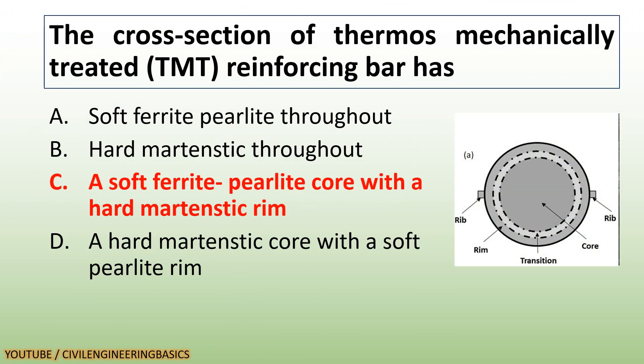The cross section of a thermo-mechanically treated (TMT) reinforcing bar has a soft ferrite-perlite core with a hard martensite rim.